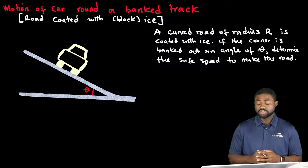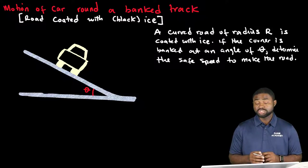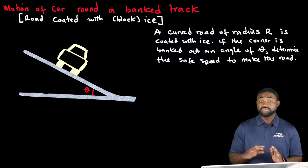Now if a road is coated with ice, effectively we can assume that there is no friction between the tires of the car and the road.